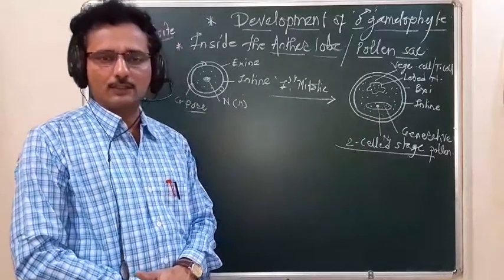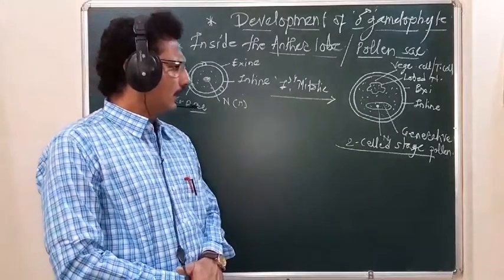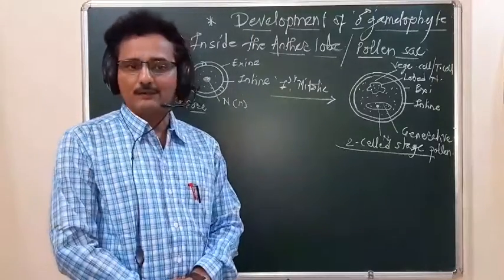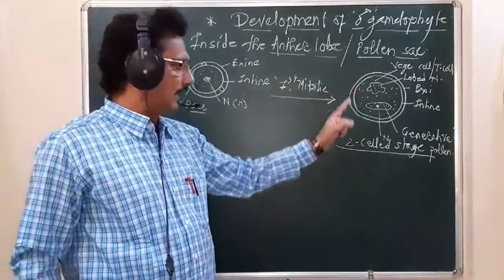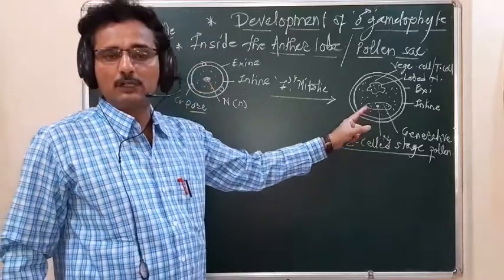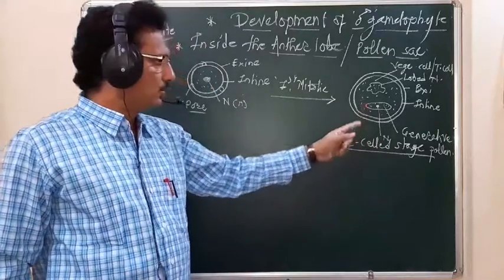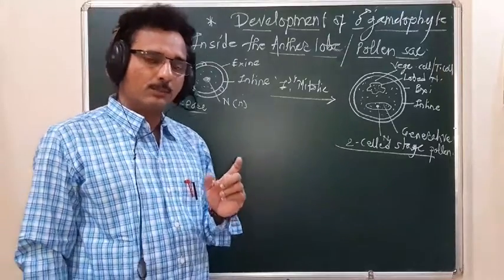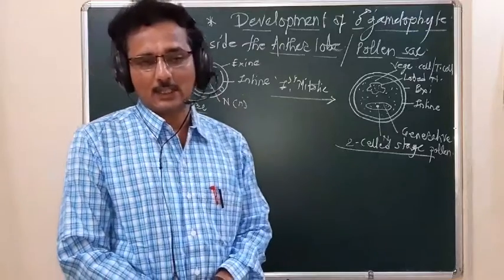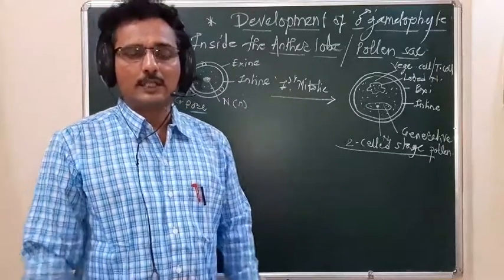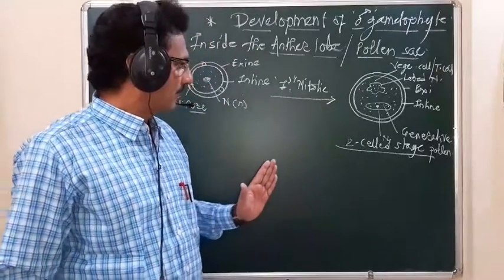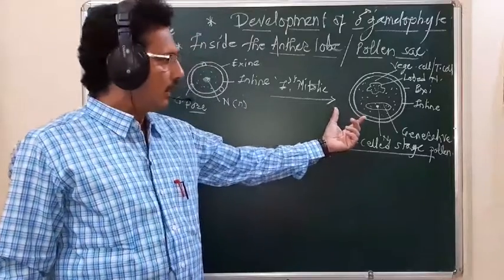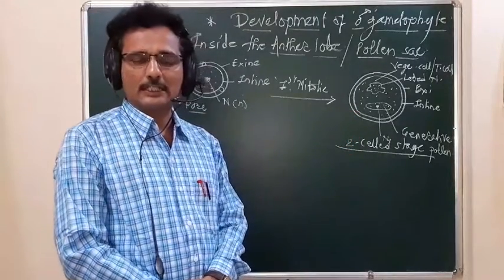In some plants, inside the pollen sac, the generative cell divides through one mitotic division forming two non-motile male gametes, so pollen is released at a three-cell stage - but this is a rare occurrence. The common occurrence is that pollen grains are released at a two-cell stage.